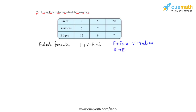Using this formula we will find out the unknown values, taking each column one by one. Let us take the first column where f is the unknown and the number of vertices and edges are given. Let us take Euler's formula, f plus v minus e, and substitute the values given from the table, keeping the unknown as the same variable.